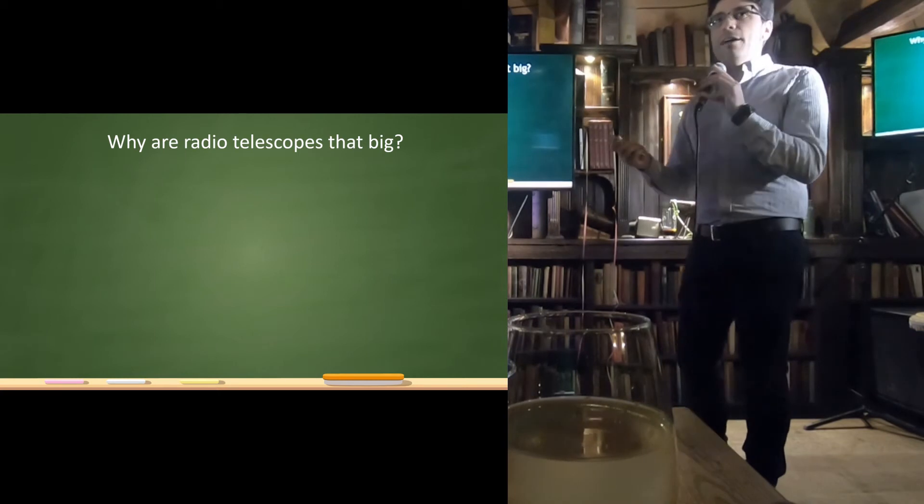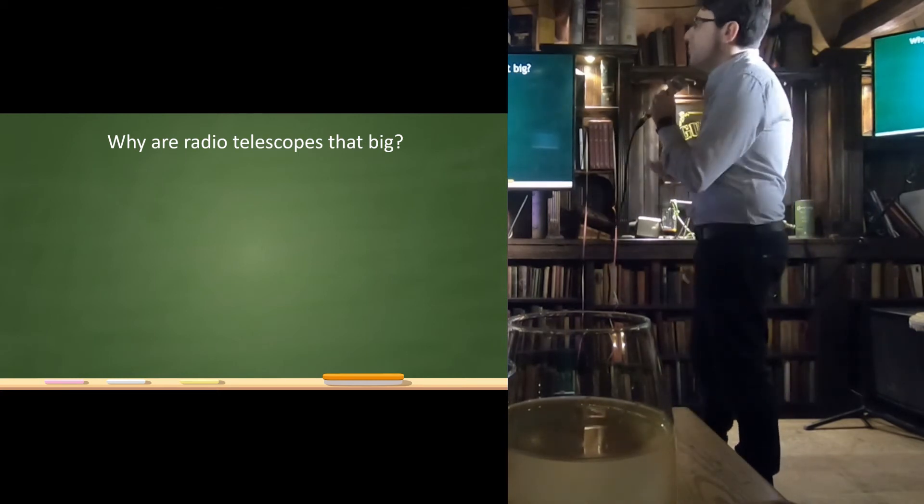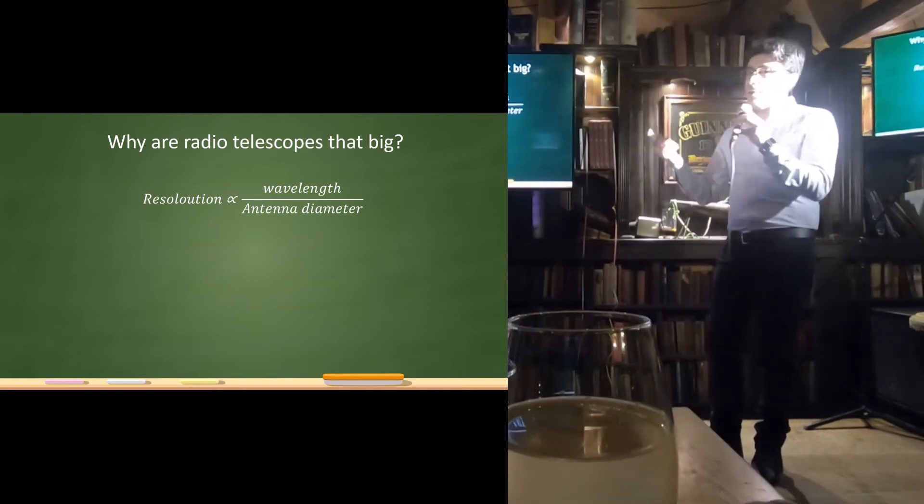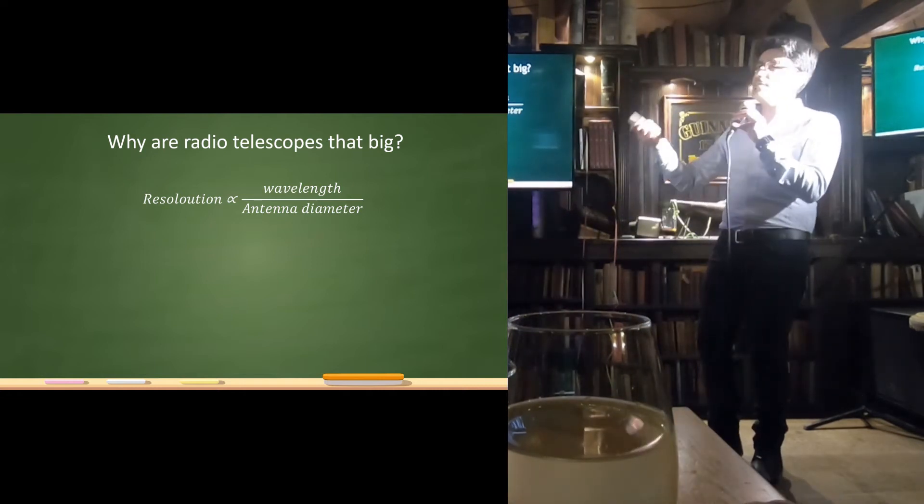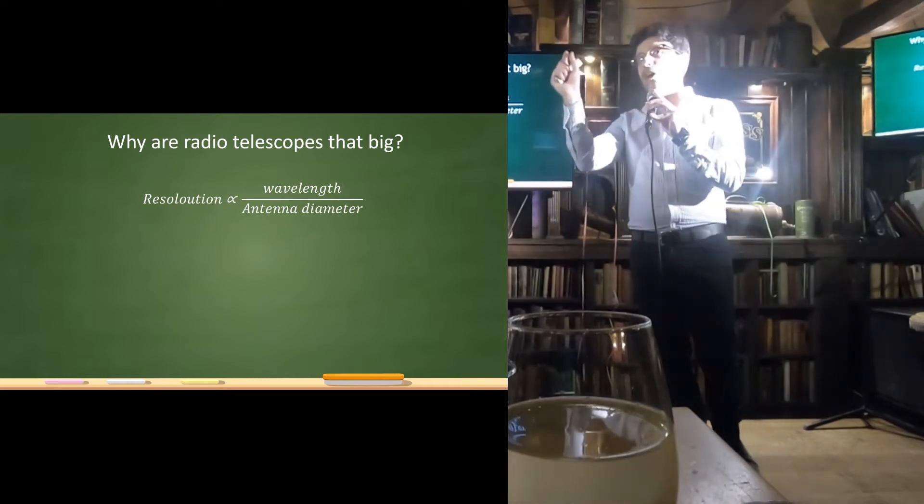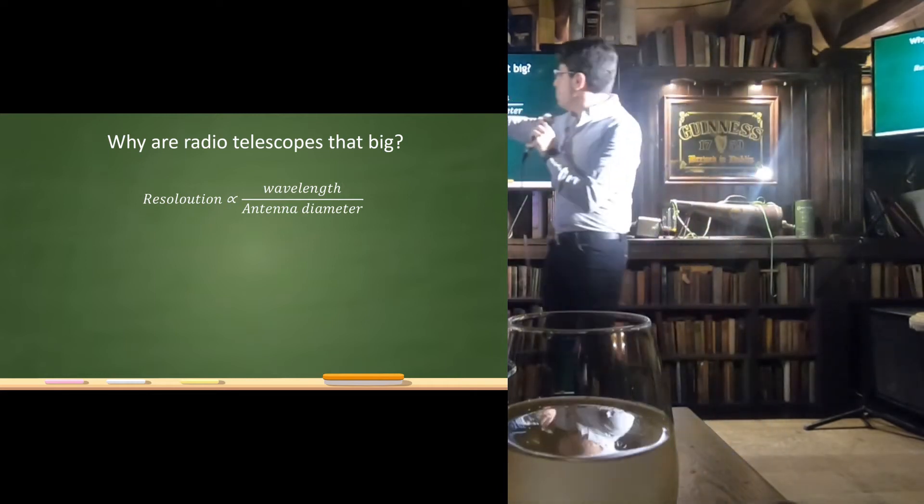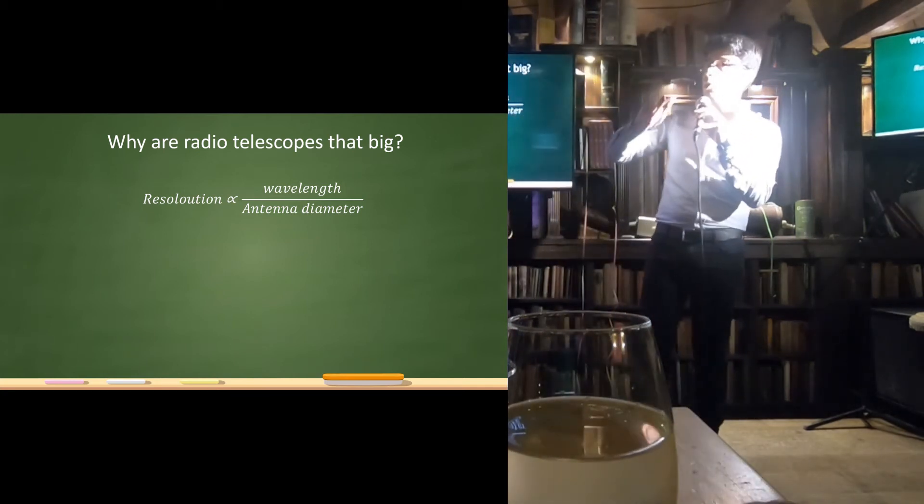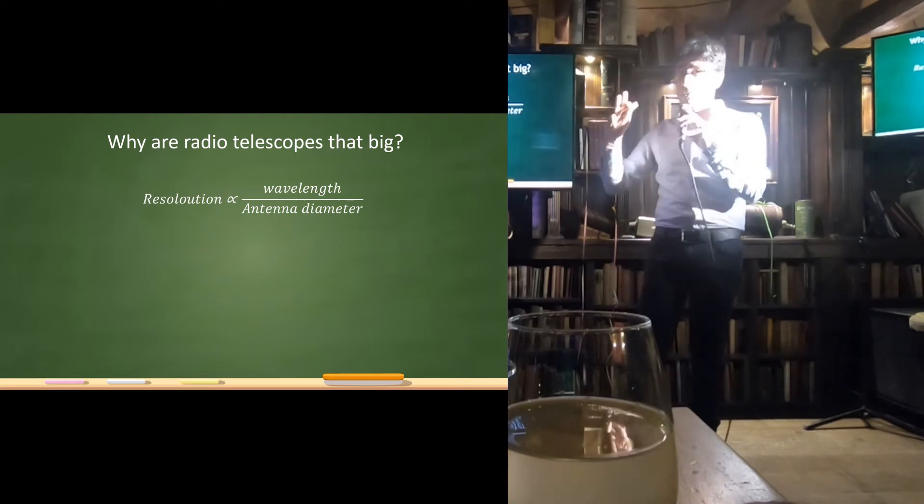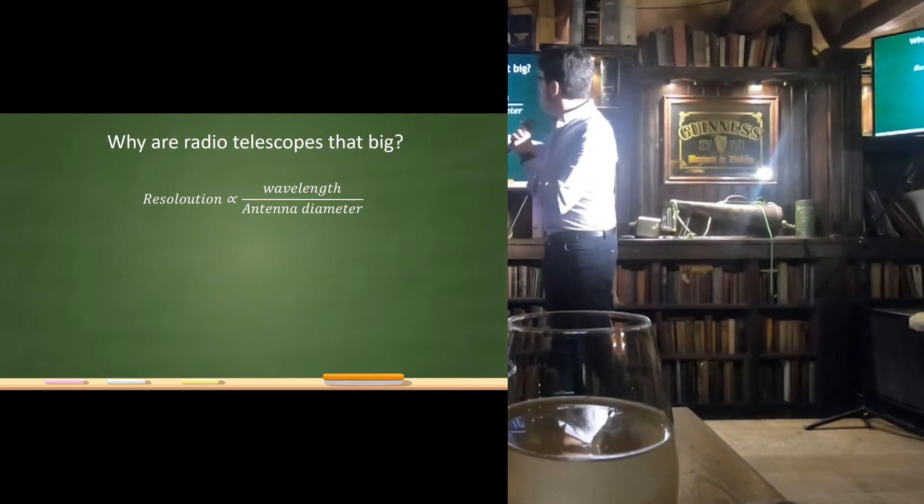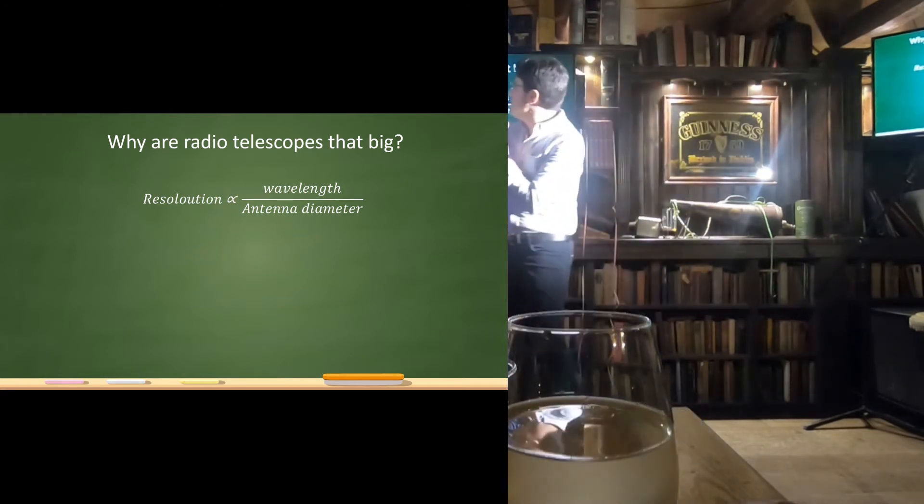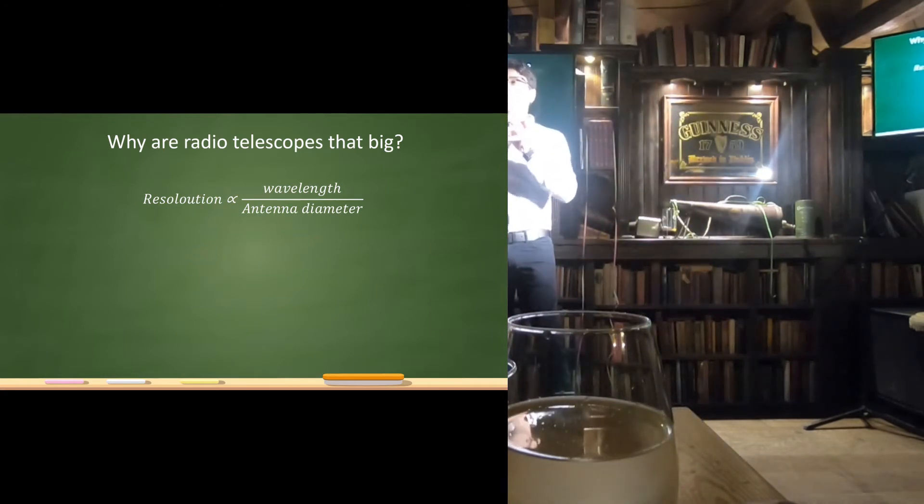So maybe you can guess why. There are two reasons for this. The first reason, the first good reason, is because of resolution. I mean, resolution, maybe all of you are familiar with resolution. In this case, it's the ability of the telescope to resolve two points in the sky. So, this is proportional to the wavelength. That means higher wavelength, higher resolution, lower wavelength, lower resolution, and we are at lower wavelengths. And it's inversely proportional to the antenna diameter. So, that means the larger is the diameter, the smaller is this number, the better is the resolution. That's why we need as much large as possible telescopes.